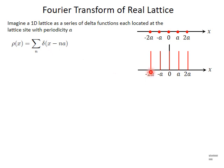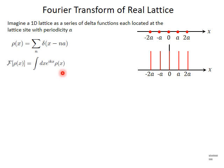Let's see what happens to this density function if we Fourier transform it. If we Fourier transform rho of x, we put this function in here. You have a summation over n, where n goes over all the lattice points. Such an integral gives a term which is e raised to i·k·n·a, where n is again summed over all the lattice points from minus infinity to plus infinity.